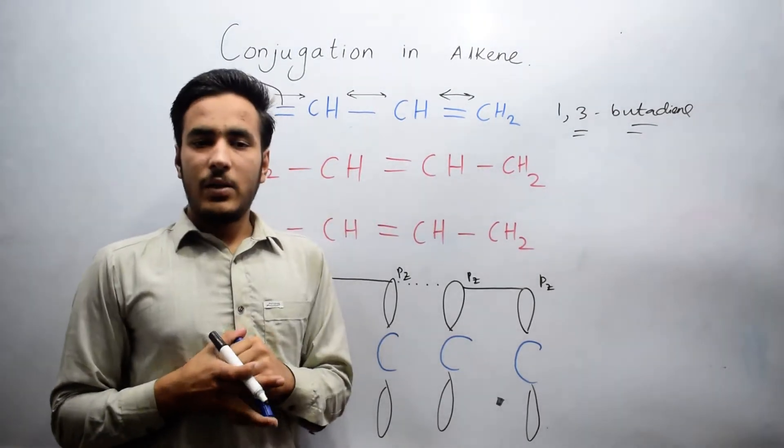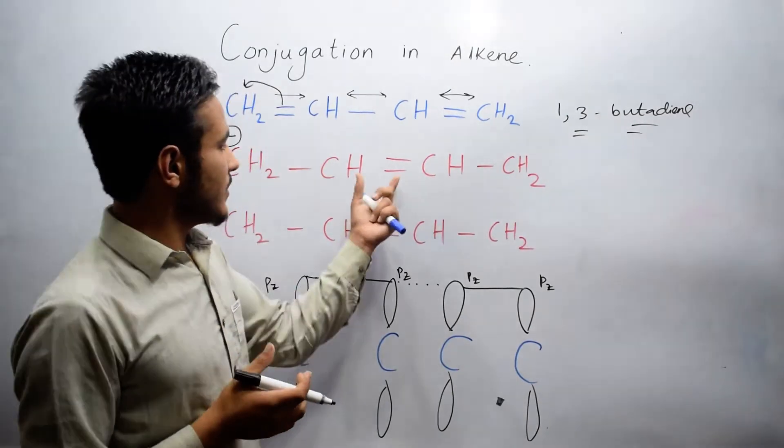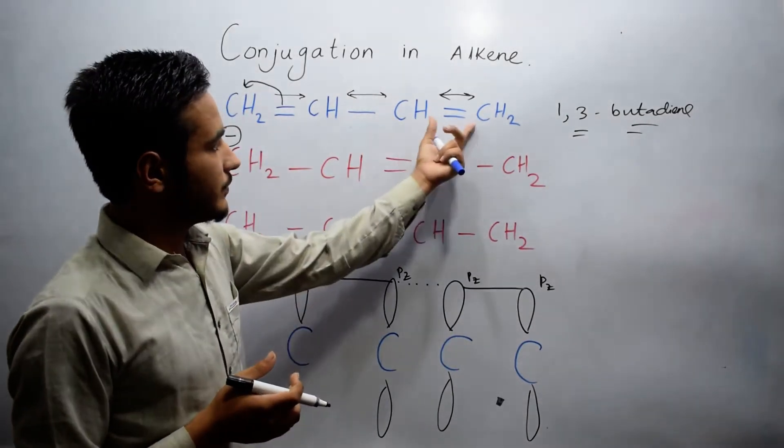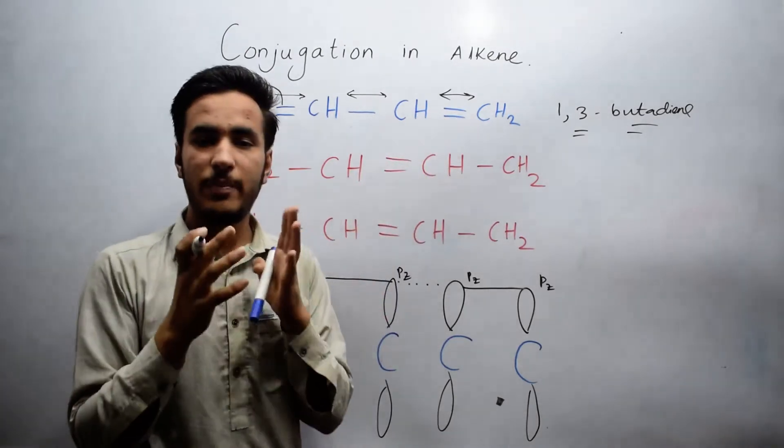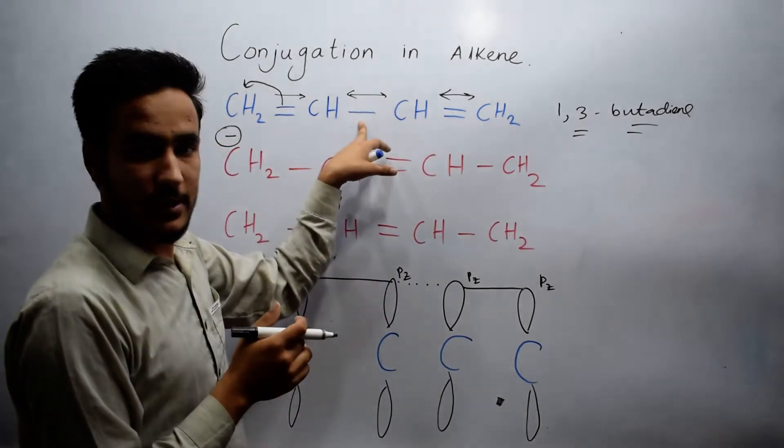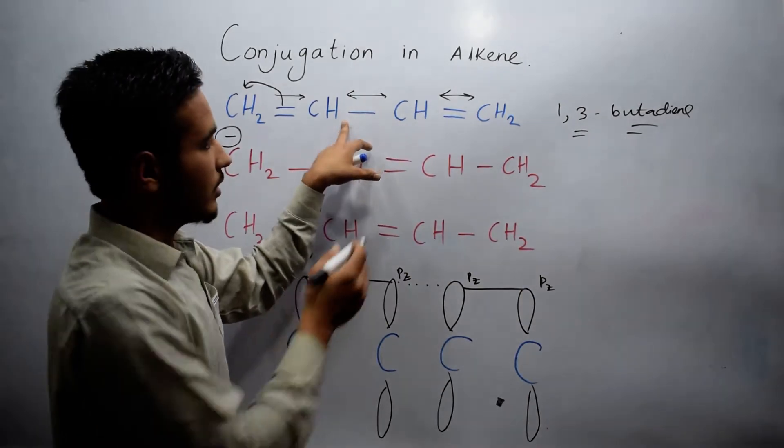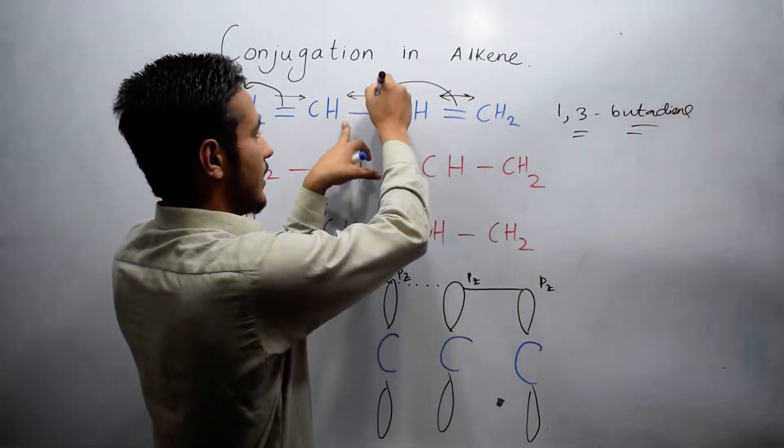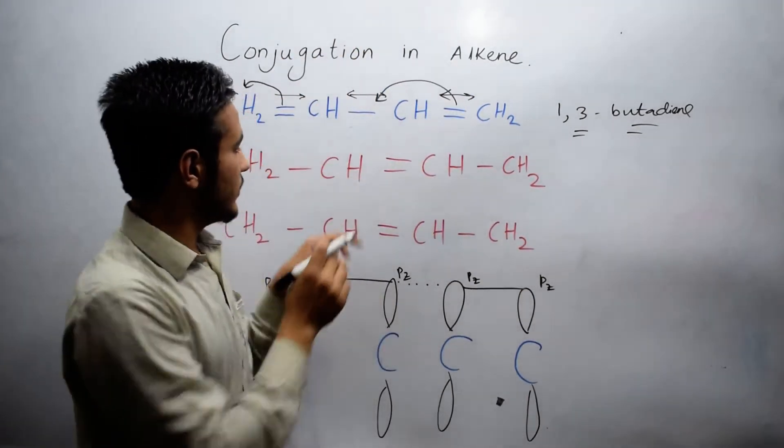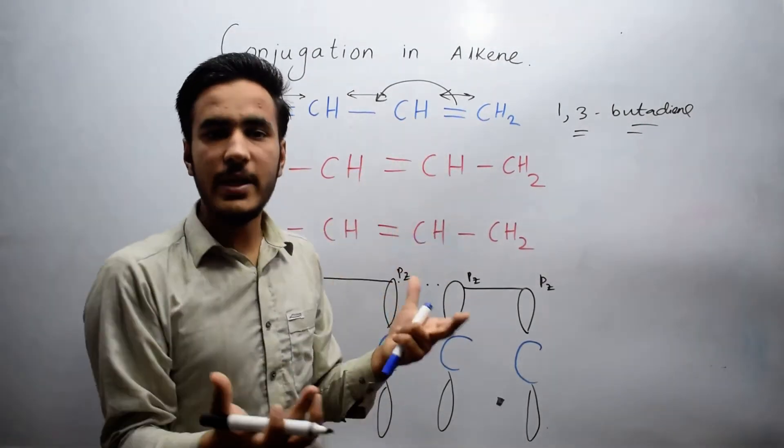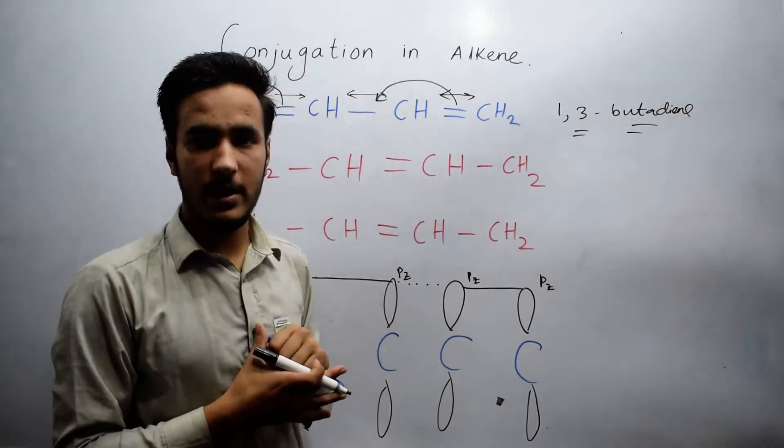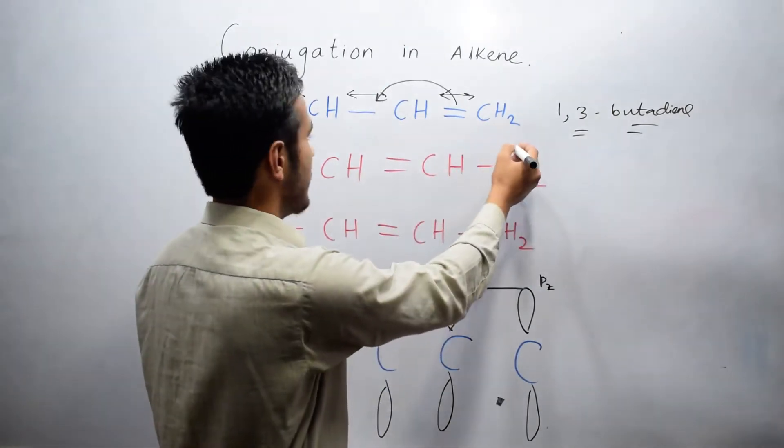The inner bond in 1,3-butadiene will break on CH. This bond will become a double bond. Here, electron deficiency takes place, so it will acquire a positive charge.